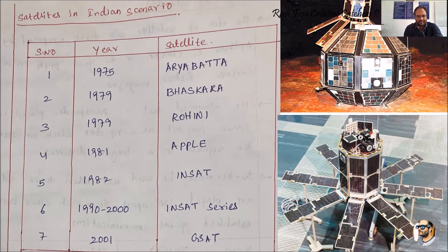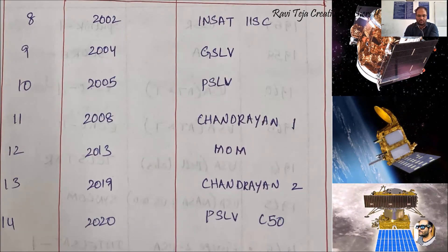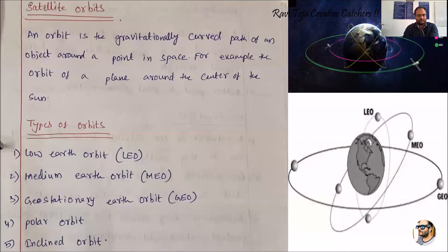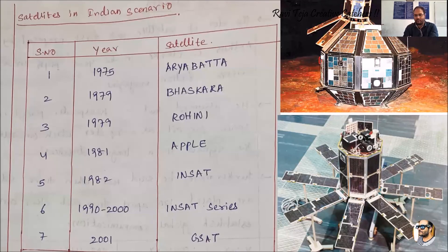From 1992 to 2000, India launched several series of INSAT satellites. In 2001, the GSAT satellite was launched; in 2002, INSAT-IASC; in 2004, GSLV; in 2005, PSLV. In 2008, Chandrayaan-1 was launched, which was very famous. In 2013, the MOM (Mars Orbiter Mission) satellite was launched; in 2019, Chandrayaan-2; and in 2020, PSLV-C50. These are the various satellites launched by India — a proud moment each time.